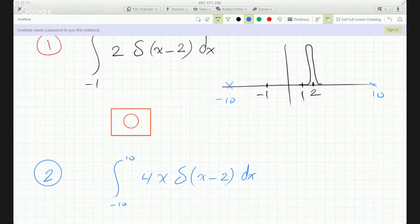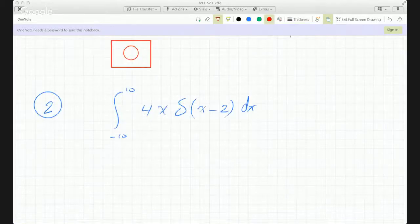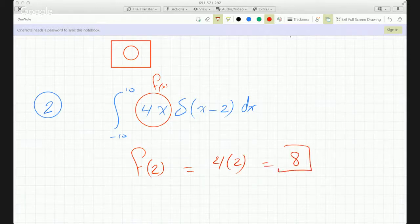So that means the Dirac delta function will do what? It will pick up the value of the function. The value of the function here is 4x, this is f of x. It picks up the value of f of x at x equals 2, so you get f of 2. So the integral becomes 4 times 2, which becomes 8, because now it is within the bounds of integration.